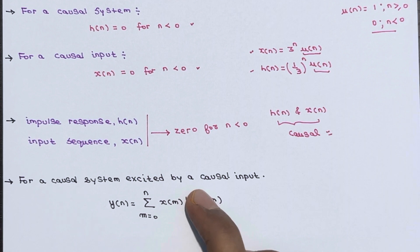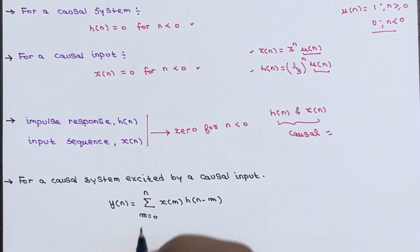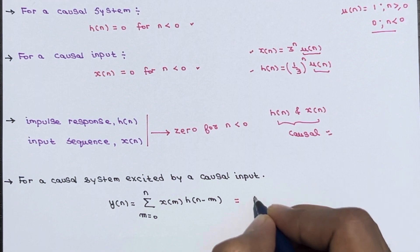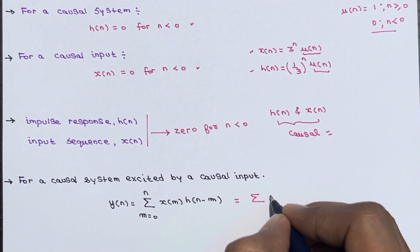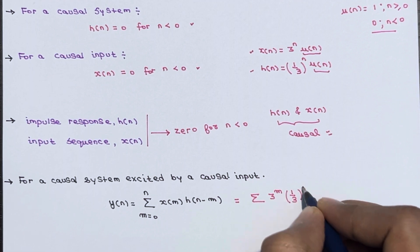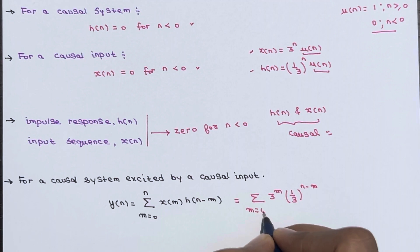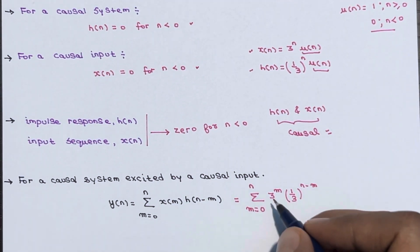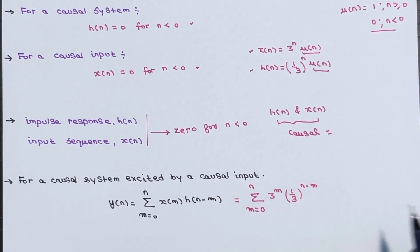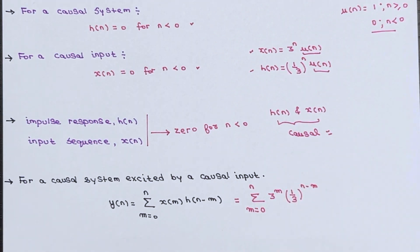For a causal system excited by a causal input, y(n) = Σ x(m) · h(n−m), where m ranges from 0 to n. Substituting, x(m) = 3^m and h(n−m) = (1/3)^(n−m), with u(n) = 1 over this range so we drop that term. The summation limit is m = 0 to n.